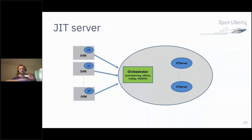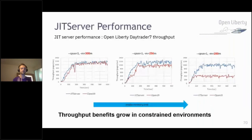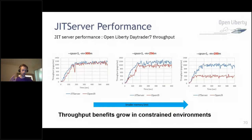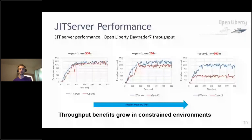Here's a comparison of OpenJ9 with and without JIT server. In a 300MB environment — about the same. In a 256MB environment — OpenJ9 goes down a little but not too bad. But in a 200MB environment, OpenJ9 starts to struggle — the throughput goes very low — whereas with the JIT server the throughput stays quite high. This allows you to flag alarms, quickly go in and fix the problem, rather than your application just stopping and customers not being able to access things. It's very simple to enable the JIT server.